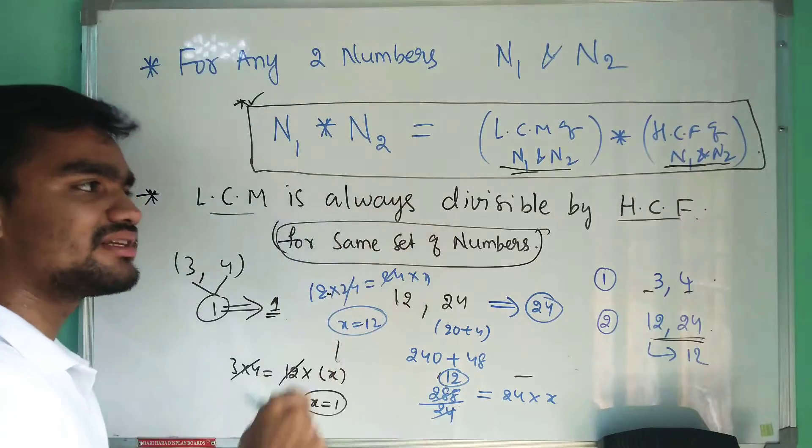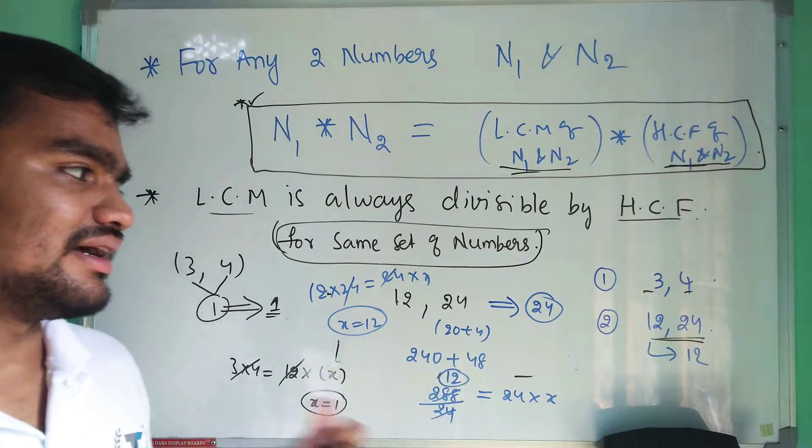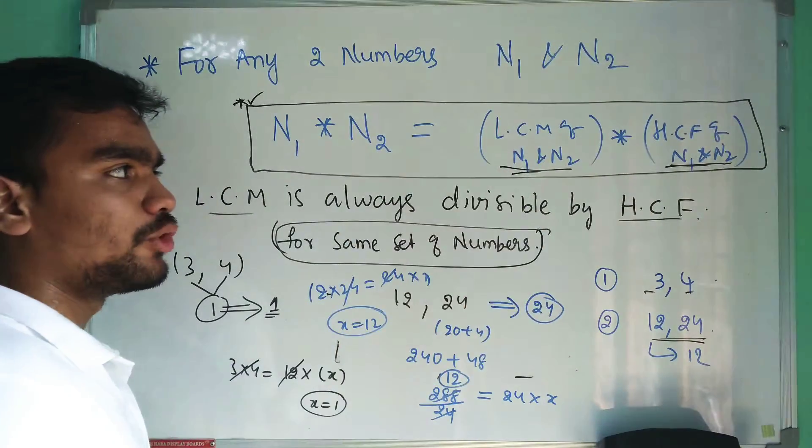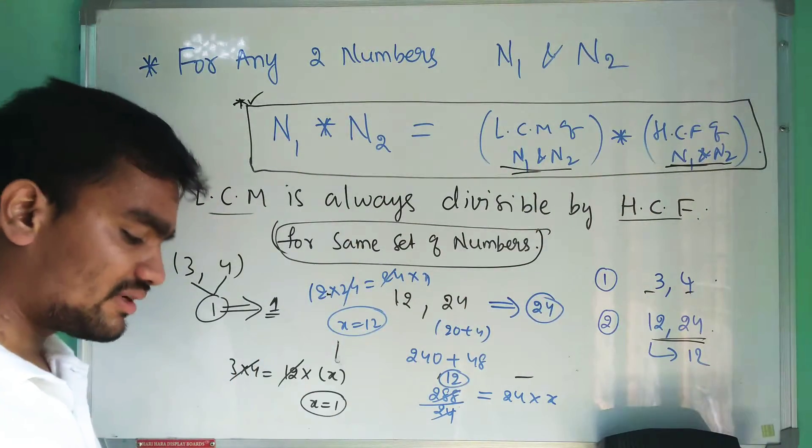So in this way by using this formula, simply you can calculate HCF or LCM when the set of two numbers are given and one of them, either LCM or HCF of the numbers, is given.